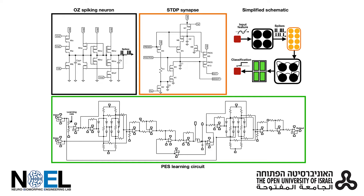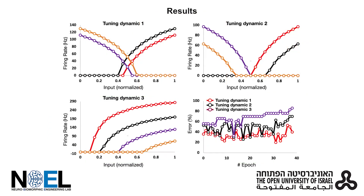We evaluated a small-scale design of our system with a classification task on the Iris Flower dataset. Each OZ neuron is characterized by a tuning curve, which specifies the neuron response dynamic.